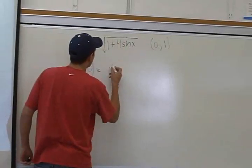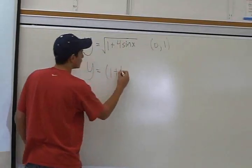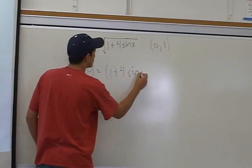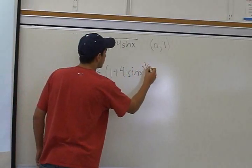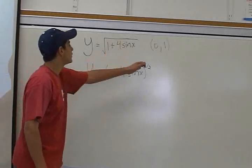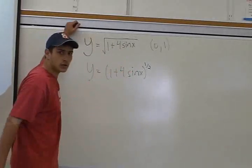And instead of writing it as a root, you could always write it as (1 + 4sin(x)) to the 1/2. All we did is just take the root side and made it an exponent of 1/2.